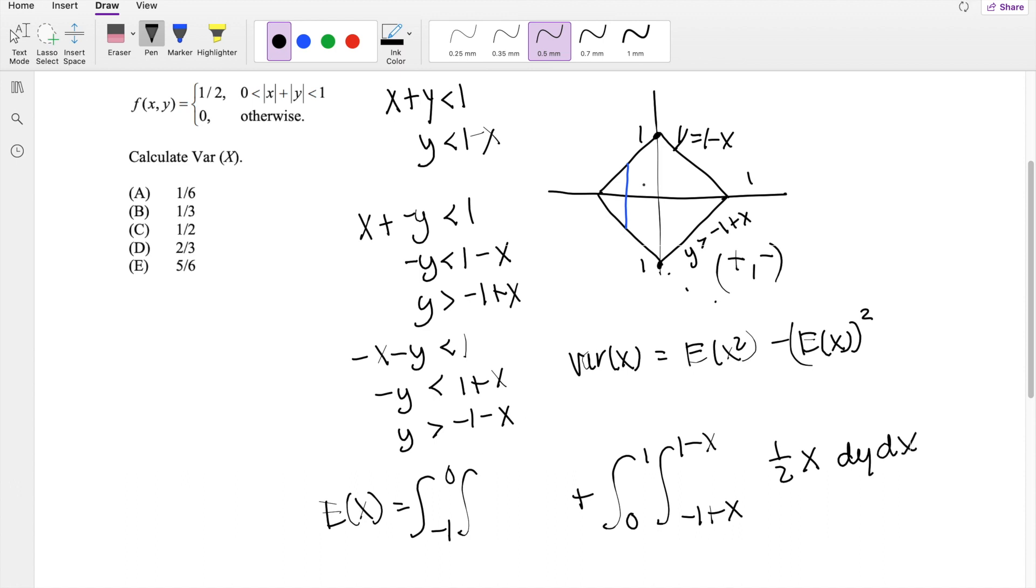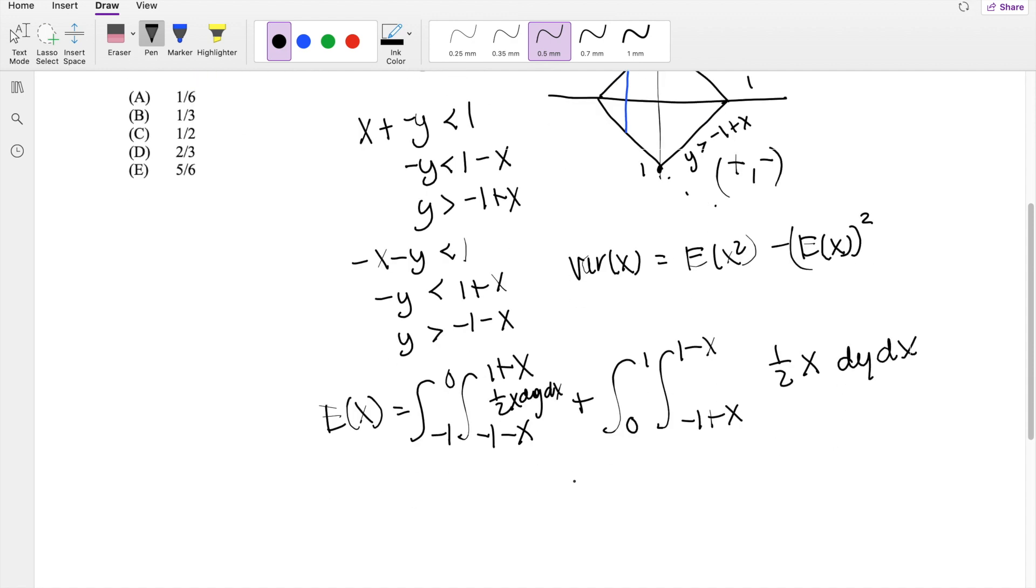And then how about for this one? The upper limit for this negative 1 to 0, this one right here is exactly starting from y-intercept with a slope of 1. And the lower one is starting from negative 1 with a slope of negative 1, 1 half x, dy, dx.